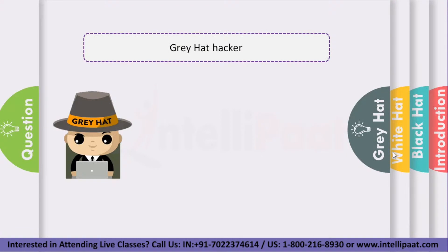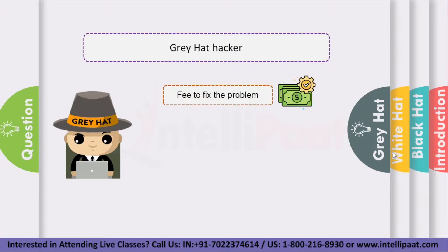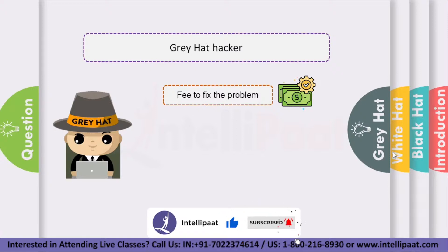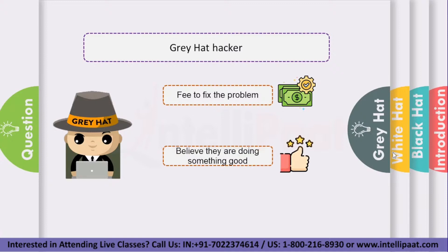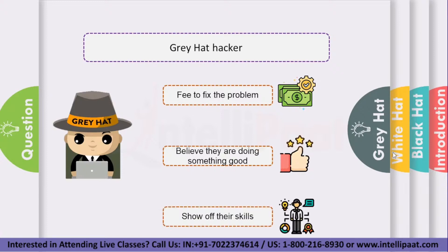Somewhere between white and black hat are grey hat hackers. Grey hat hackers often look for vulnerabilities in a system without the owner's permission or knowledge. If issues are found, they report them to the owner, sometimes requesting a small fee to fix the problem. Some grey hat hackers like to believe they are doing something good for companies by hacking their websites and invading their networks without permission. Still, company owners rarely appreciate unauthorized forays into their business information infrastructure. Often, a grey hat's real intention is to show off their skill and gain publicity, maybe even appreciation, for what they consider a contribution to cyber security.